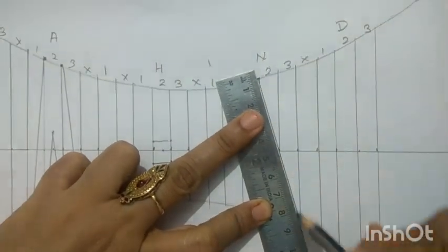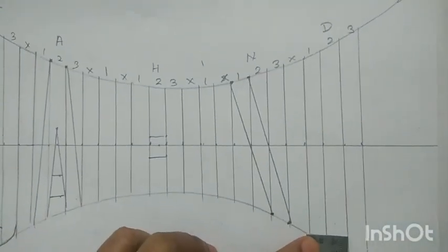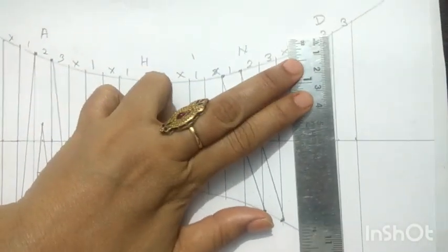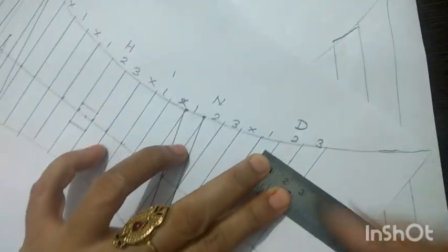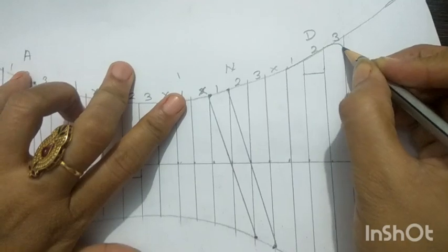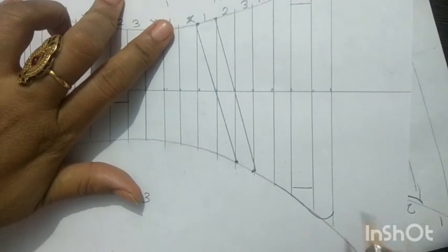Now N is ready. For D, draw one centimeter line at the bottom and one centimeter at the top. The line is ready for D. Curve the line here and curve the line here. Draw the graph with light pencil and now erase the pencil.